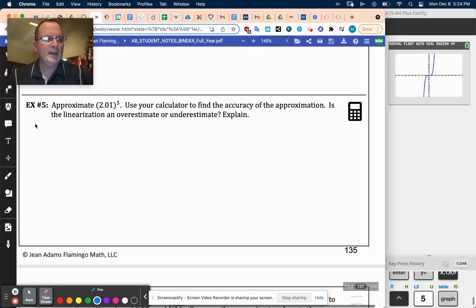So I'll write all that out. So if we let f of x equals x to the 5th, estimate f of 2.01 given that 2 to the 5th is 32.